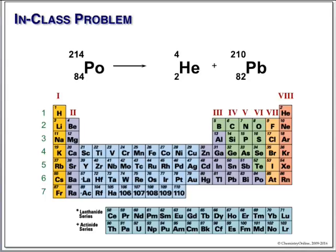That's an alpha particle - really quite simple. Plus two charge, you lose two protons so your atomic number drops, and you lose four mass units so your mass number drops by four.